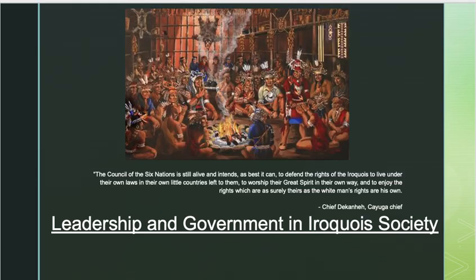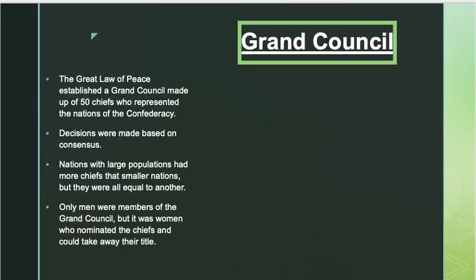That brings us to what we're going to talk about today: the leadership and government of Iroquois society. Here's a quote from the 1920s: 'The Council of Six Nations is alive and attends as best it can to defend the rights of the Iroquois to live under their own laws.' Basically, historically and today, the Iroquois wanted to live under their own laws. The Great Law of Peace established a Grand Council made up of 50 chiefs representing all the nations of the confederacy.